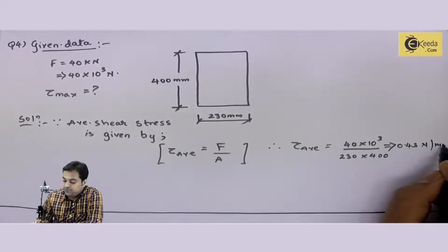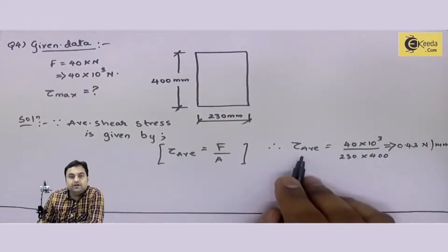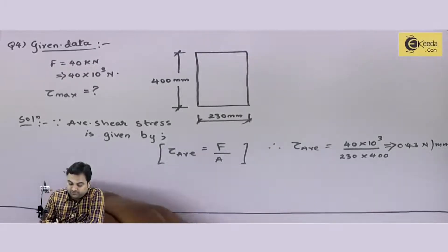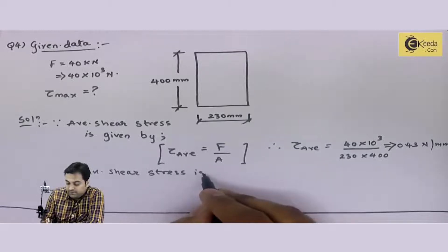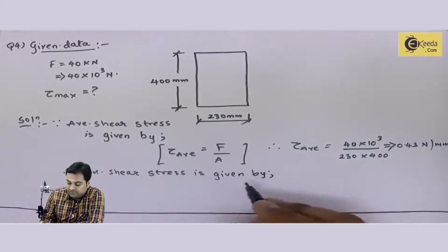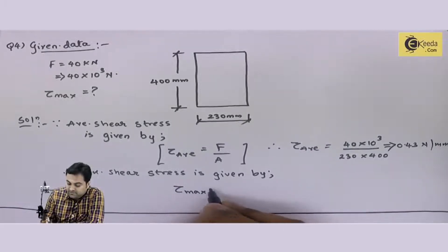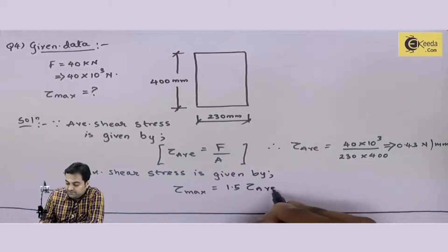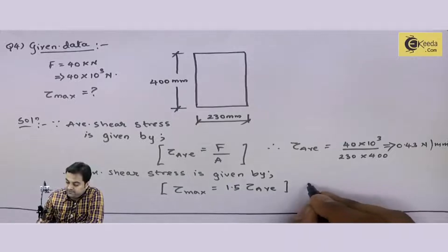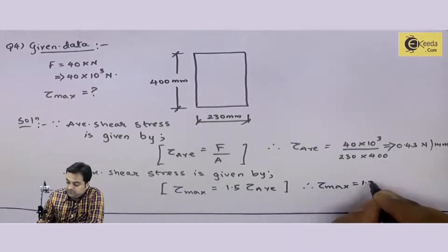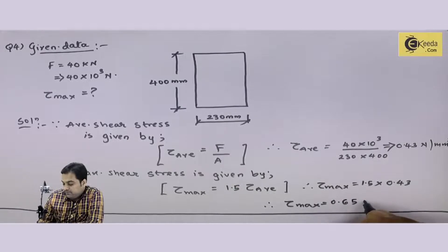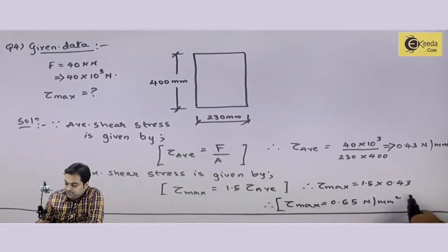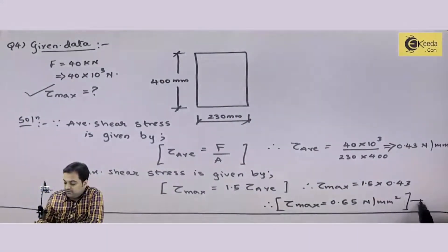After getting tau average, we can get tau max. So therefore, maximum shear stress is given by: tau max is equal to 1.5 times of tau average, which is 1.5 times of 0.43. So tau max comes out to be 0.65 Newton per mm square. The question asked us to calculate tau max, and here we have calculated tau max.